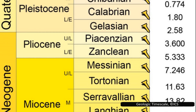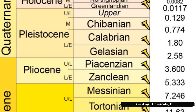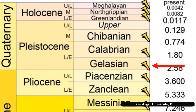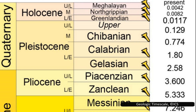The Quaternary Period is the current period in Earth's history. It began 2.58 million years ago and continues up to the present day. It includes two epochs: the Pleistocene and the Holocene. The Pleistocene lasted for most of the length of the Quaternary, only ending 11.7 thousand years ago, when the modern epoch, the Holocene, began.